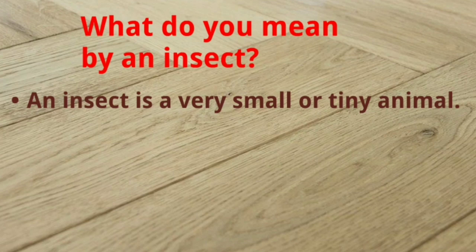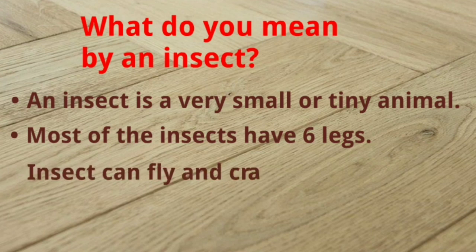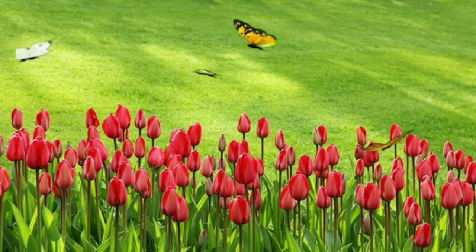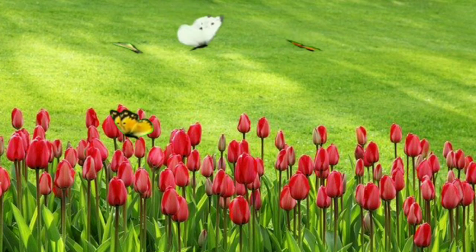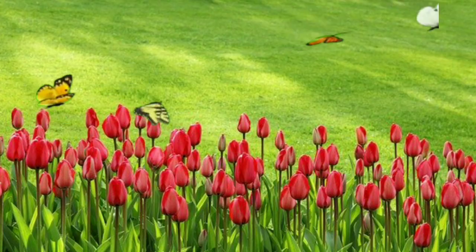Most insects have six legs. Insects can fly and crawl. Some insects have wings. Let's see some common insects with their names and pictures.